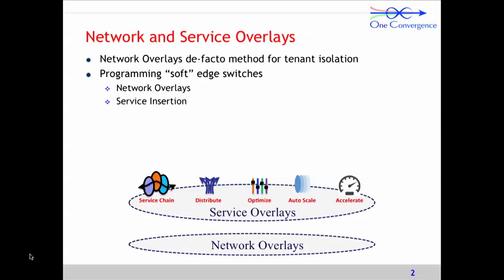In addition to insertion and chaining of these services, we're doing things like auto scaling with elastic load balancing for this service layer. I actually have a live demo showing an elastic WAF service. We also offer distributed services like distributed routing. We're also working with partners like Cavium Networks and Freescale in terms of acceleration — scale up in addition to scale out — on some of the service functions.